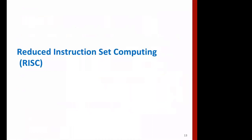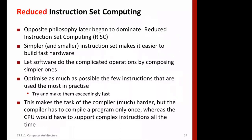Now let's move to Reduced Instruction Set Architecture — it's the opposite philosophy. It's not very old; from around 1980, people started working on RISC. It says that a simpler and smaller number of instructions makes it easier to build fast hardware. In RISC architecture, all instructions can be shown within a single page — it's very few, elegantly designed instructions. Opcode size is the same, number of operands is nearly the same, and instruction size is the same. This means decoding is faster, execution is faster, and pipeline design is simpler — instructions can be executed more efficiently.